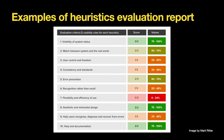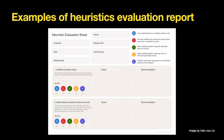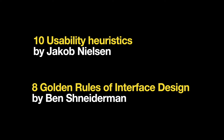Here is the first example of a heuristic evaluation report — it shows the scope compared to how many rules were followed for each heuristic. And here is another example of a heuristic evaluation report, which shows the severity of the issues and provides recommendations on how to solve them. Jacob Nielsen's ten usability heuristics for user interface design and Ben Schneiderman's eight golden rules of interface design are probably the most commonly used sets of usability heuristics.